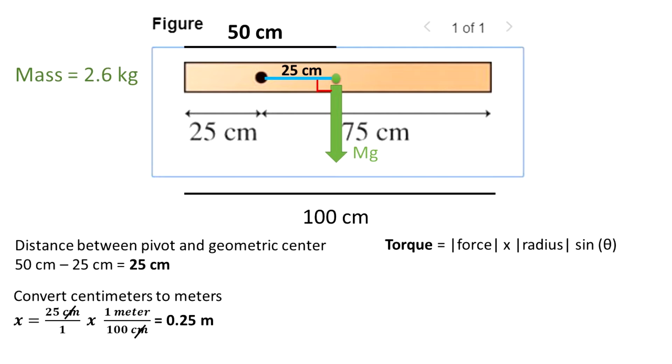It is important to remember that because this rod is uniformly distributed, the gravity acts at the geometric center of the rod. So the effect of gravity is 25 cm to the right of where the pivot point is.